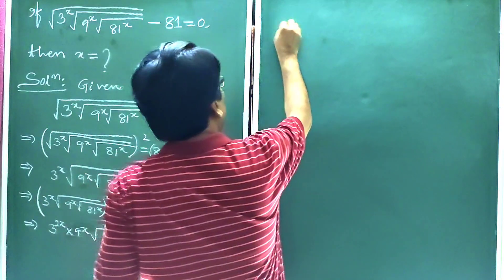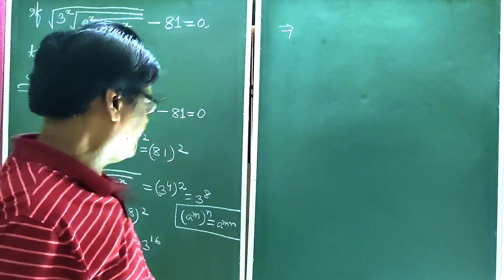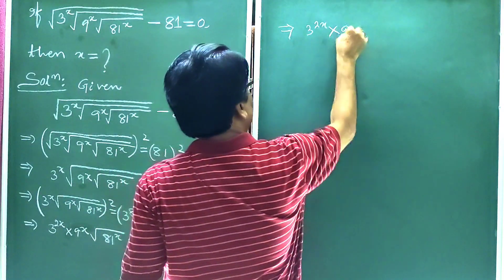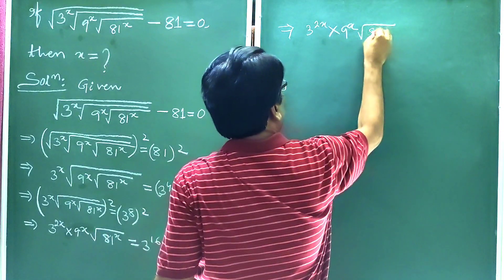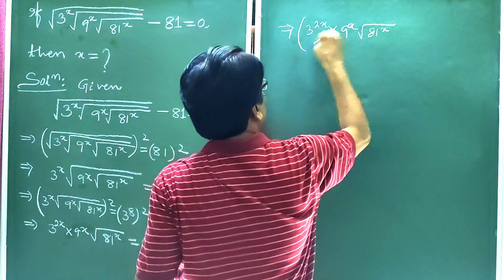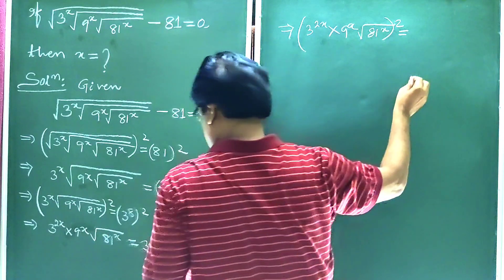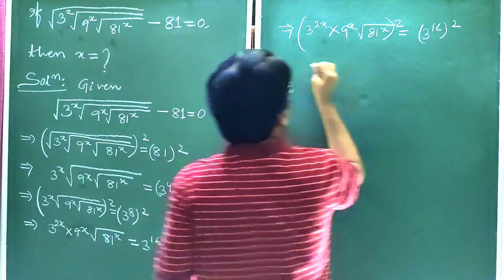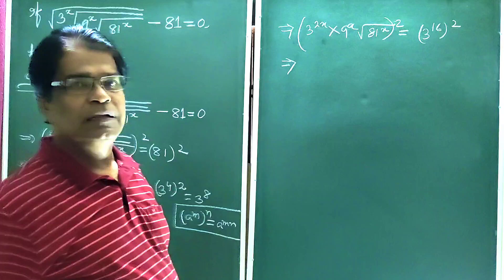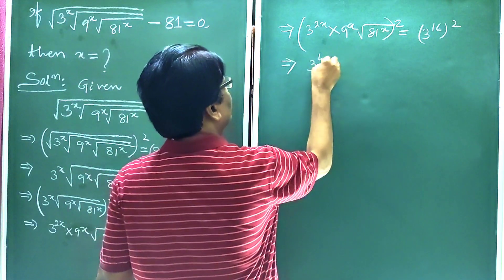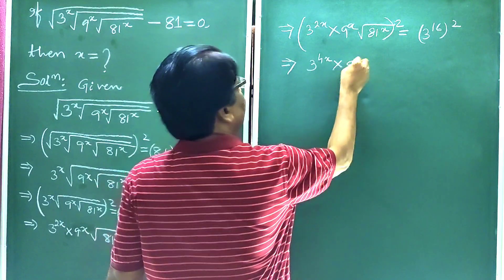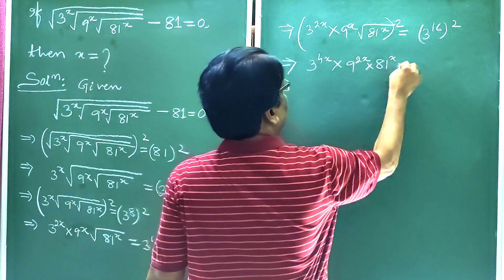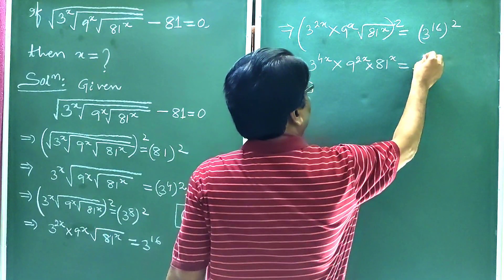This implies 3 to the power x into 9 to the power x, root over whole 81 to the power x. Squaring both sides again, we get 3 to the power x into 9 to the power x into 81 to the power x is equal to 3 to the power 32.